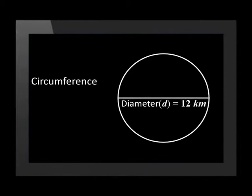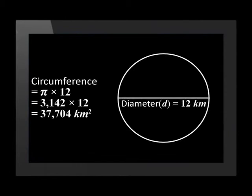Let's look at an example of working with a circle. We will use a large circle in a field with a diameter of 12 kilometers. We can calculate the circumference or perimeter of the circle using pi times 12. So it's 3.142 times 12, which is 37.704 kilometers.